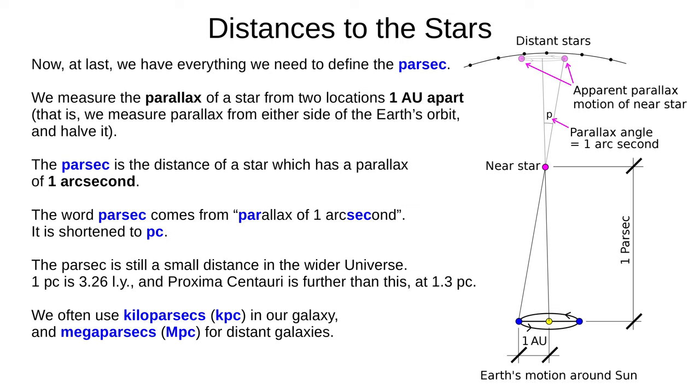We typically use parsecs for the distances between stars, kiloparsecs for large structures like our galaxy, and megaparsecs to measure the distance between galaxies. Andromeda, the nearest major galaxy is 0.89 megaparsecs away.